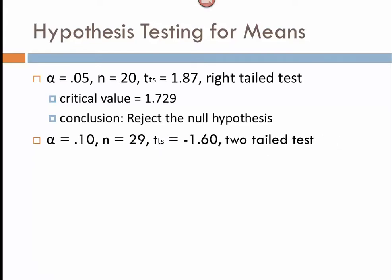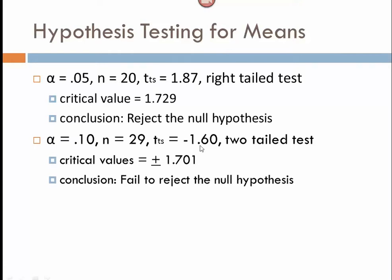Here's the next test. See if you can determine what the critical values would be for this, given the alpha level of 0.10, and my n being equal to 29, and the fact that it's a two-tailed test. So, the critical value of this case is positive and negative 1.701. So, drawing a picture of that, and then seeing where your test statistic lands in comparison to that, our conclusion here would be to fail to reject the null hypothesis. Negative 1.60 is not extremely enough to the left to get into the rejection region, so we fail to reject the null hypothesis.